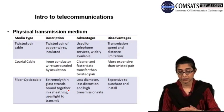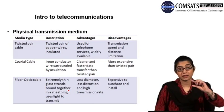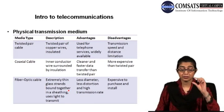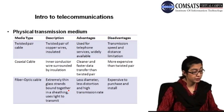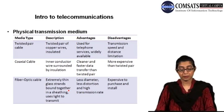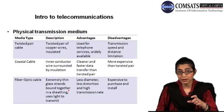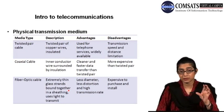Then we have the coaxial cable, which is surrounded by three layers of insulation and is a thicker wire than a twisted pair cable. Its advantage is that it is cleaner and provides faster data transfer than a twisted pair. However, its disadvantage is that it is more expensive than a twisted pair cable. You have the cable TV wire used here — that is a coaxial cable, and it is much thicker than the twisted pair.